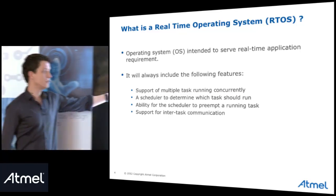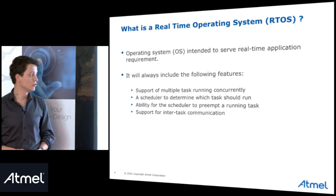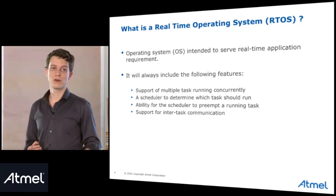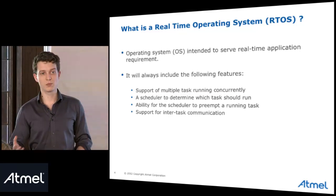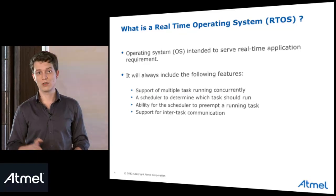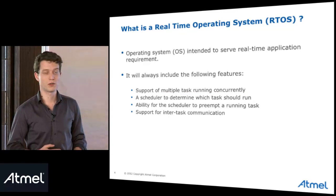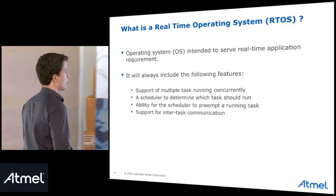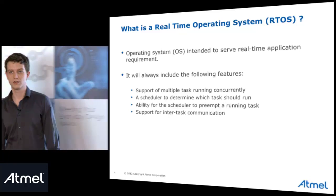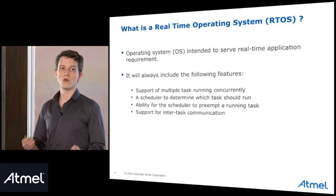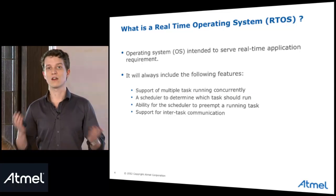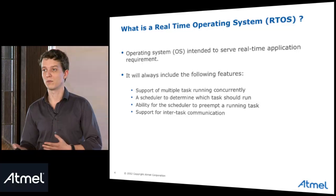The next thing is the ability for the scheduler to preempt a running task. Tasks must have priority, and if a task with higher priority needs to be executed, the scheduler must stop the execution of lower-priority tasks. The last point is support for intertask communication — objects in the RTOS kernel that allow tasks to communicate together in order to pass information.